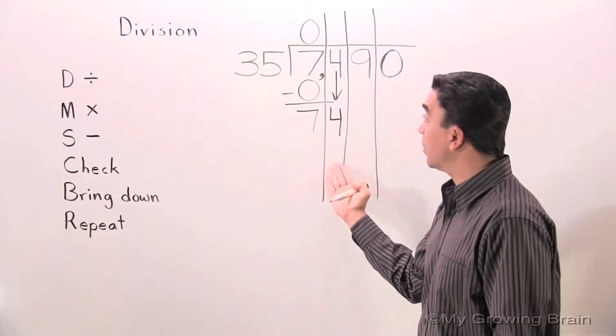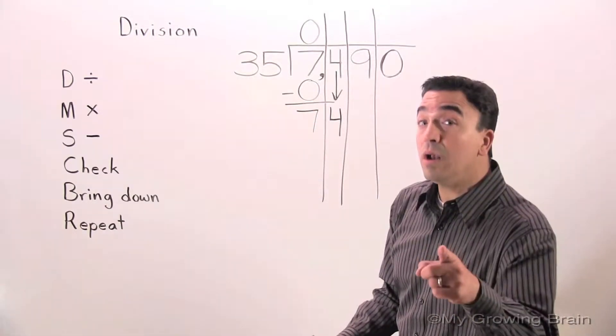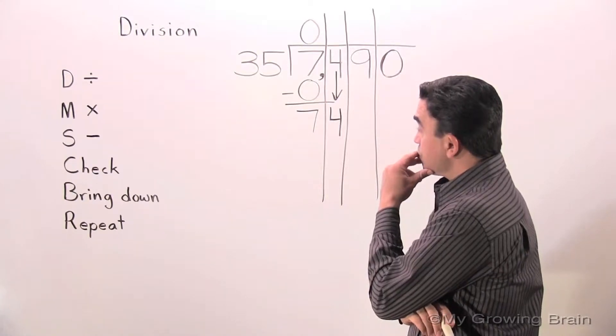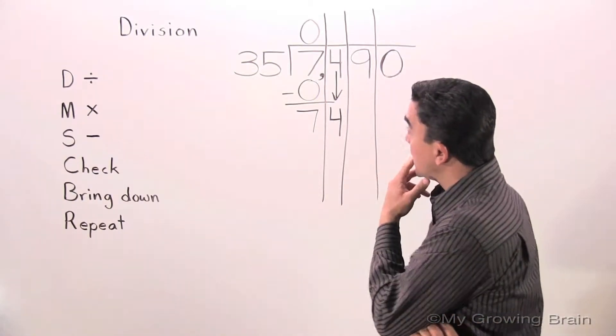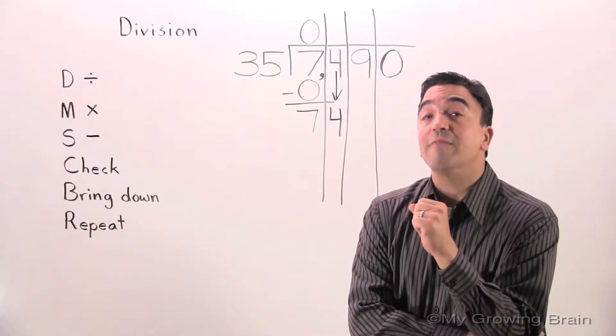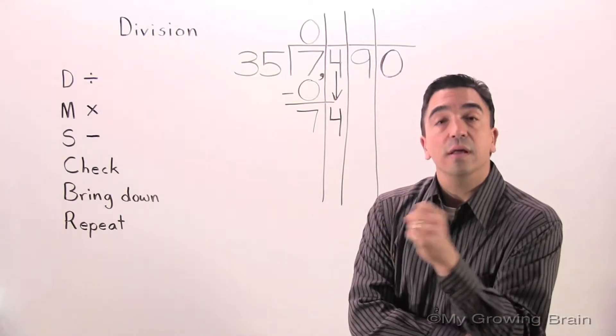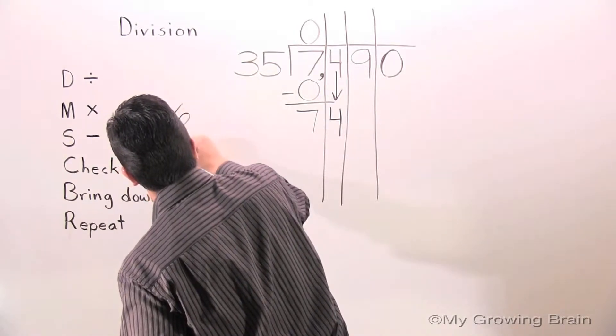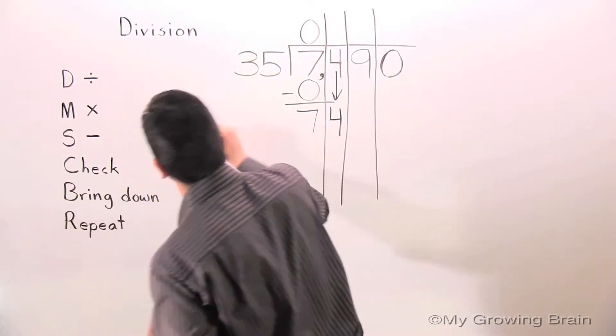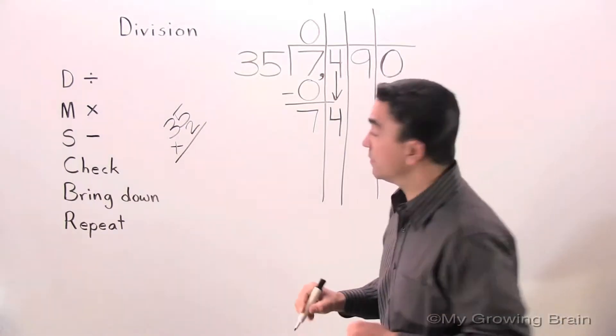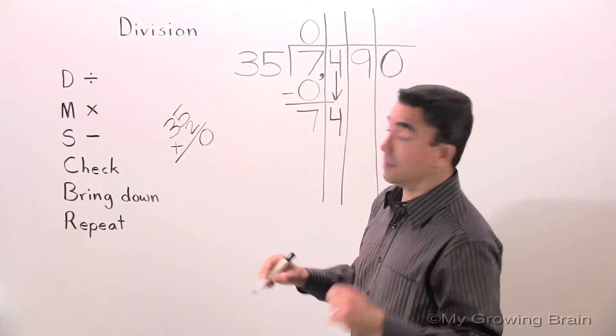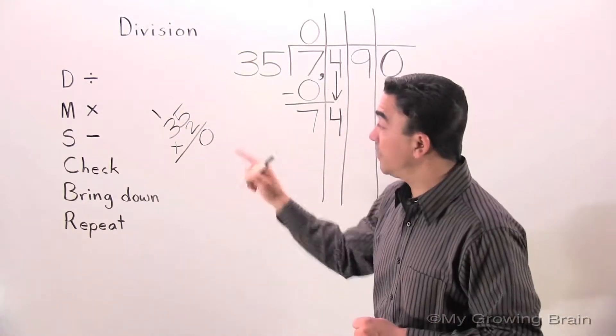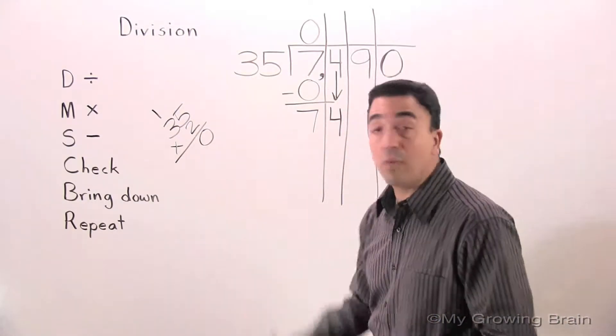Divide. 74 divided by 35, or 35 into 74. We're going to have to experiment here a little. I'm going to multiply 35 times 2. Let's see what we get. 2 times 5 equals 10. Regroup the 1. 2 times 3 equals 6, plus 1 equals 7.